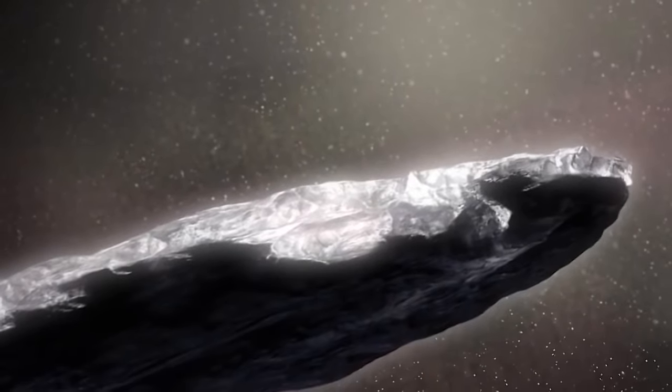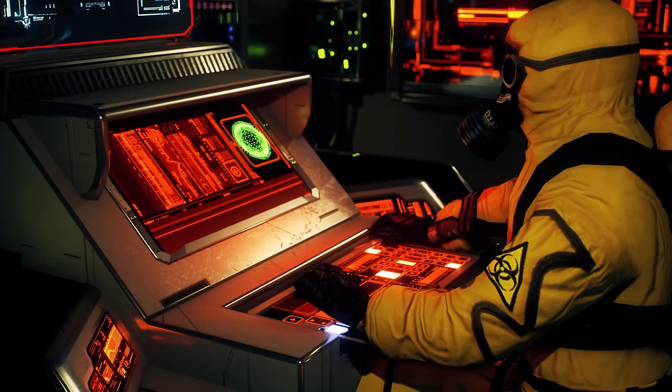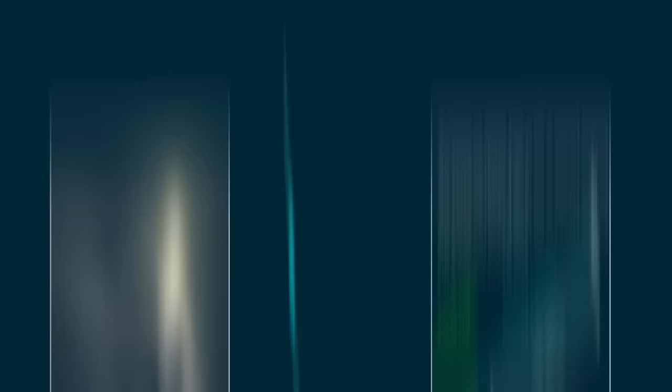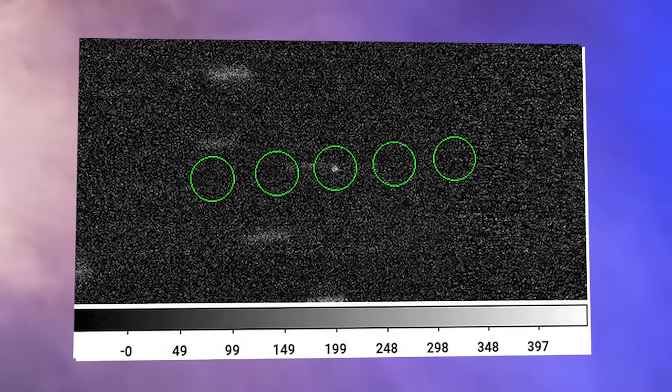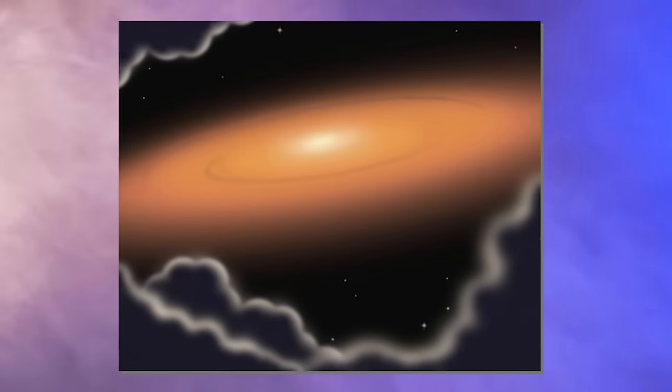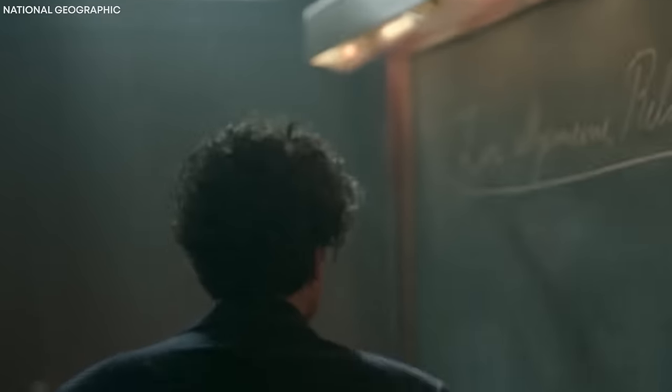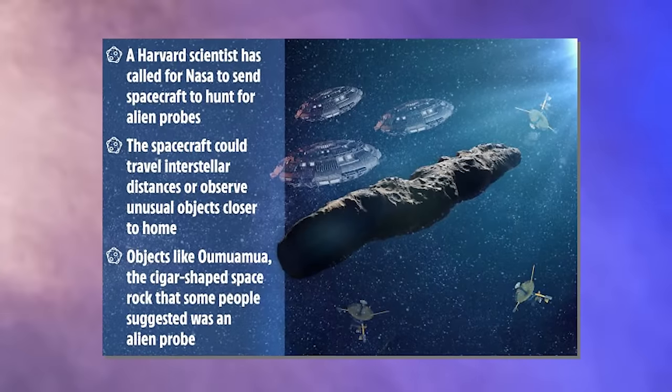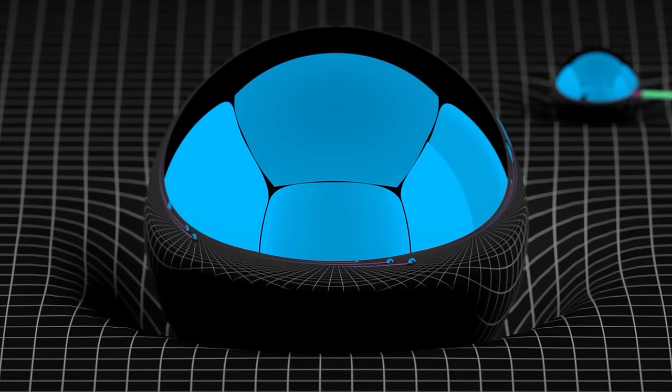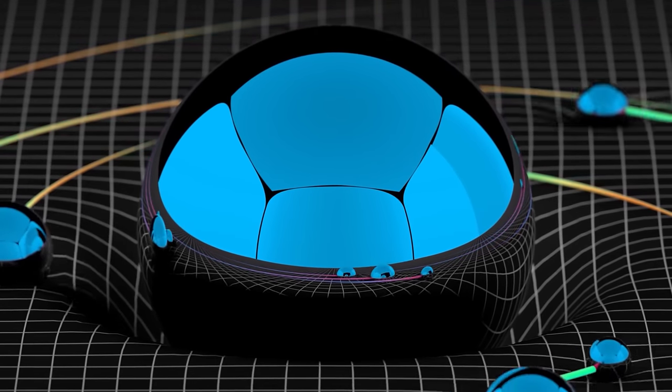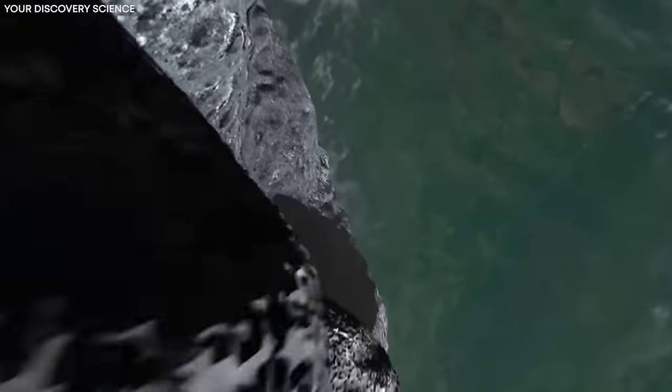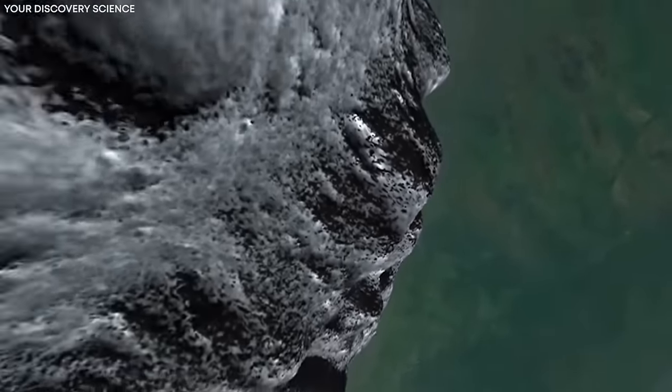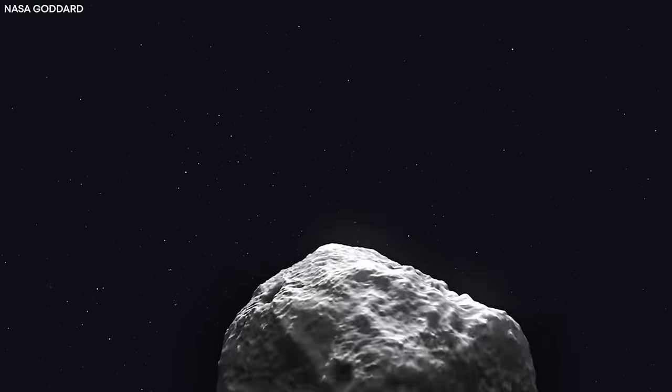But Oumuamua's velocity is not the only noteworthy aspect of its movement. Upon closer examination, scientists observed a baffling phenomenon. Oumuamua seemed unaffected by the gravitational pull of the sun, exhibiting what appeared to be a non-gravitational acceleration. Astonishingly, it effortlessly altered its trajectory while passing by the sun, seemingly defying the laws of gravity. Imagine the scene, scientists eagerly observing as Oumuamua embarked on its swift journey past the sun, anticipating that it would obediently follow the expected course dictated by the sun's gravitational force.